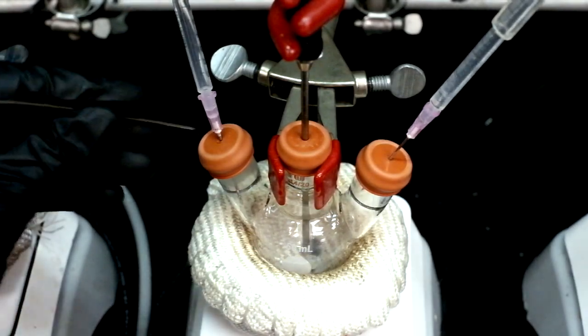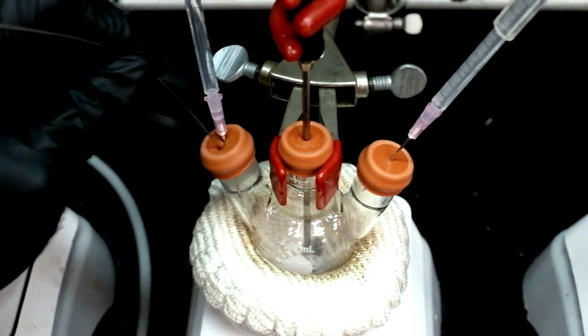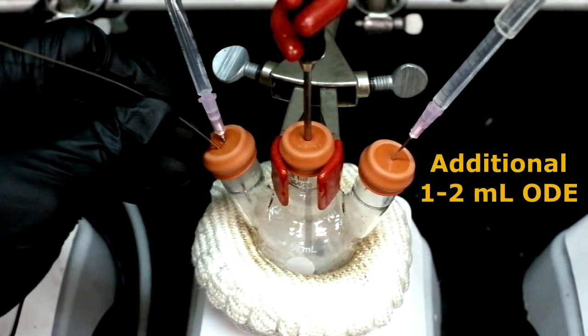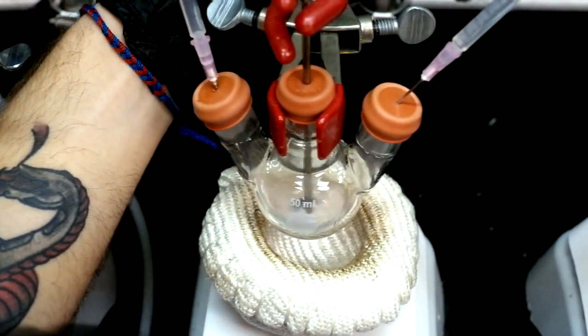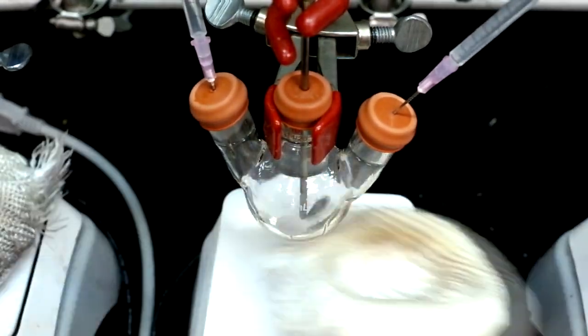If you notice your solvent evaporating during the heating process for the cadmium flask, you can add one to two milliliters of ODE. Once the cadmium solution has become optically clear and colorless, you can take it off of the heating mantle and let it cool to room temperature.